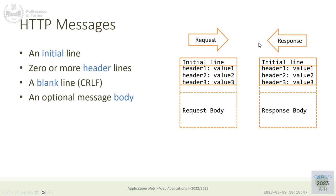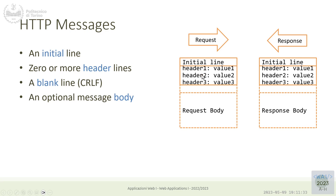HTTP is very simple because both request and response have the same structure: a first line giving the command, some headers following that first line, and an optional body. The body is separated from the headers by a blank line. Headers are always in name-colon-value form. Of course, the type of initial line and supported headers differ between request and response, but both are text messages that may or may not have a body.